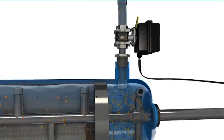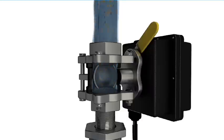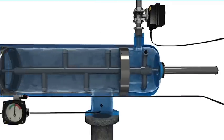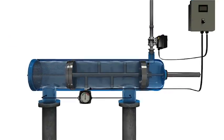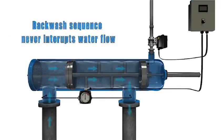Once all debris is expelled through the flush valve and the screen is completely clean, the flush valve closes and the piston pushes the particle remover back to its original position. The entire backwash sequence is performed without interrupting water flow through the filter.